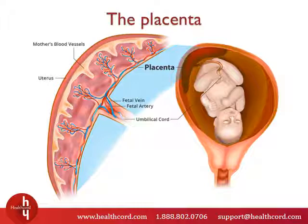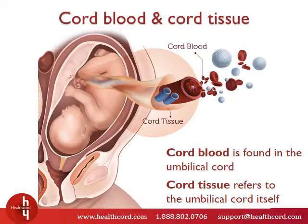You will notice that the umbilical cord connects the growing baby to the mother. The umbilical cord itself has two components: cord blood and cord tissue. Cord blood refers to the blood found within the umbilical cord, and cord tissue refers to the umbilical cord itself.